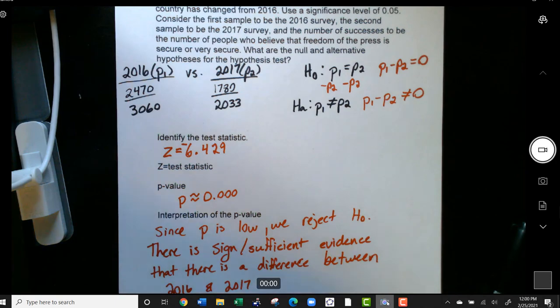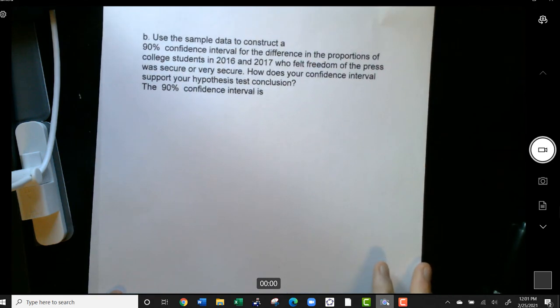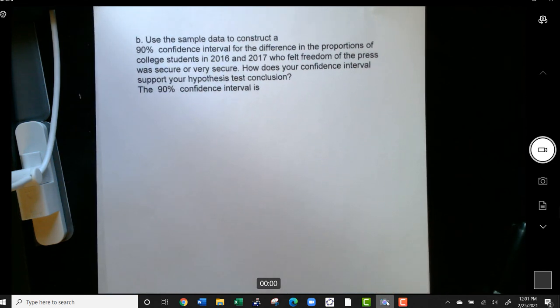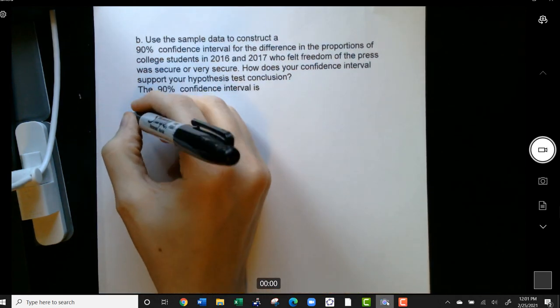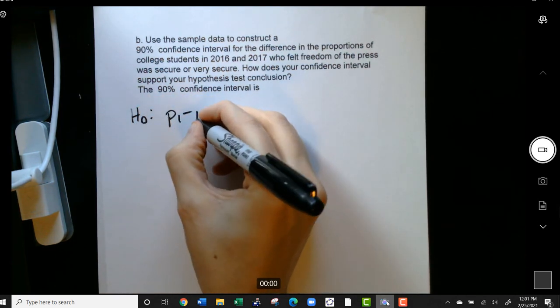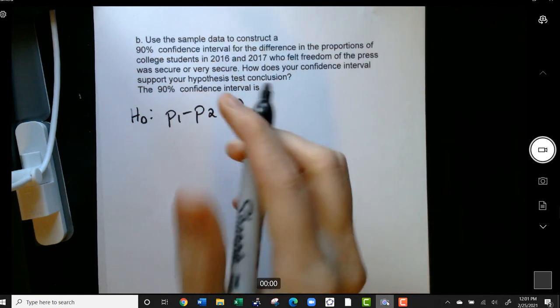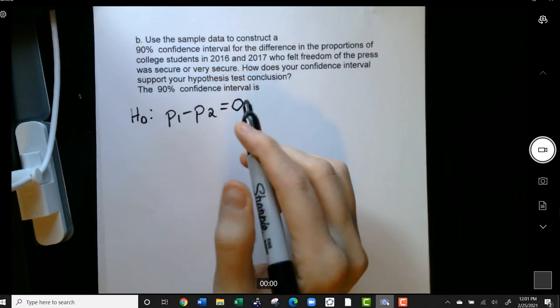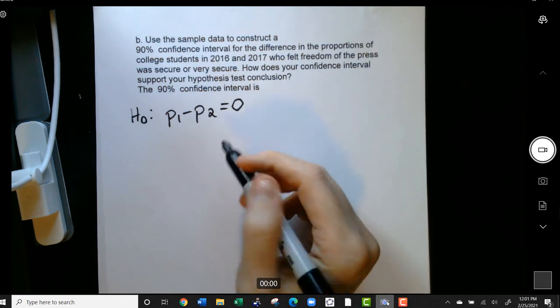Now, the next question that we're going to see in this section is asking us to construct a confidence interval for the difference in proportions of the college students. So real quick, our null hypothesis was that the difference between these two was zero. So when we construct a confidence interval, if the difference is zero, that should probably be somewhere on the interval.